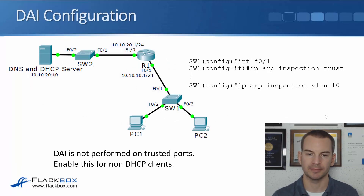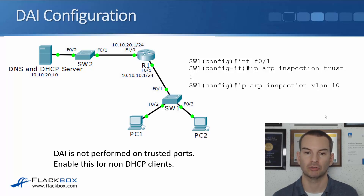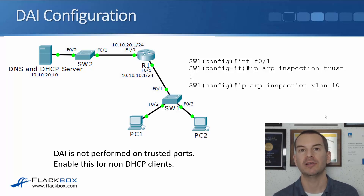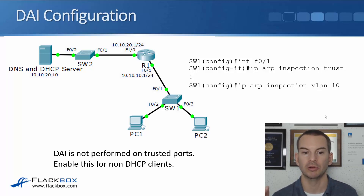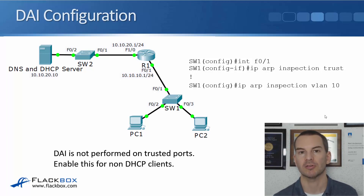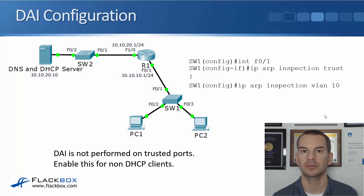For configuration, on switch one we go to interface FastEthernet 0/1 and enter 'ip arp inspection trust'. Hosts that don't get their IP address from DHCP — such as routers, firewalls, or servers — won't have a DHCP-based MAC-to-IP mapping, so you need to configure those ports as trusted. For all other PCs getting their IP address from DHCP, they won't be trusted and the switch will perform dynamic ARP inspection. You enable DAI at global configuration with 'ip arp inspection vlan 10', for example — it's enabled at the VLAN level.